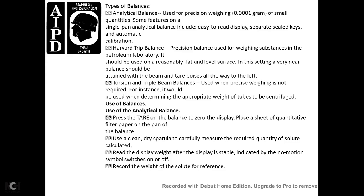The trip balance and precision balance used in the petroleum laboratory should be placed on a flat and level surface. The zero net balance should be attained with the beam and tare poise all the way to the left. The triple beam balance is used when precise weighing is not required — for example, to determine the appropriate weight of tubes for centrifuge. To use the analytical balance: zero the display; place a sheet of filter paper on the pan; use a clean dry spatula to carefully measure the required quantity; read the display when stable indicating no motion; record the weight for reference.